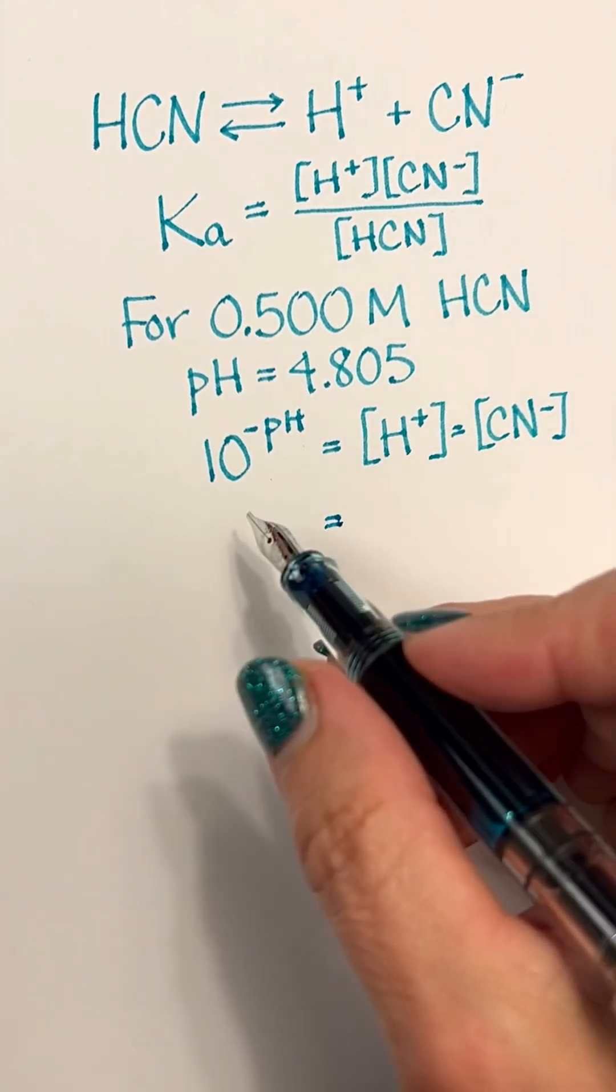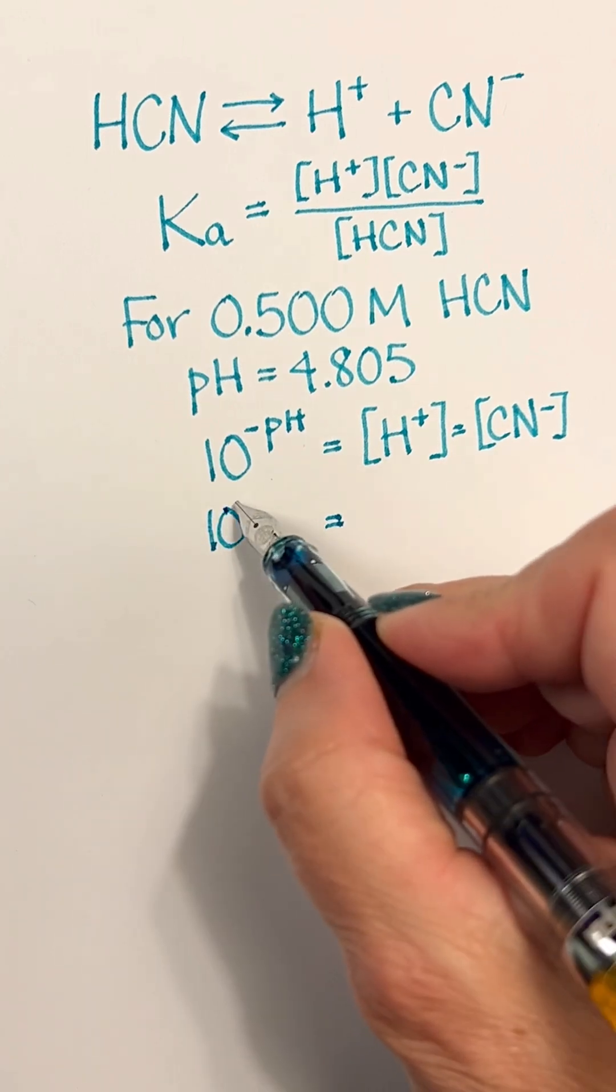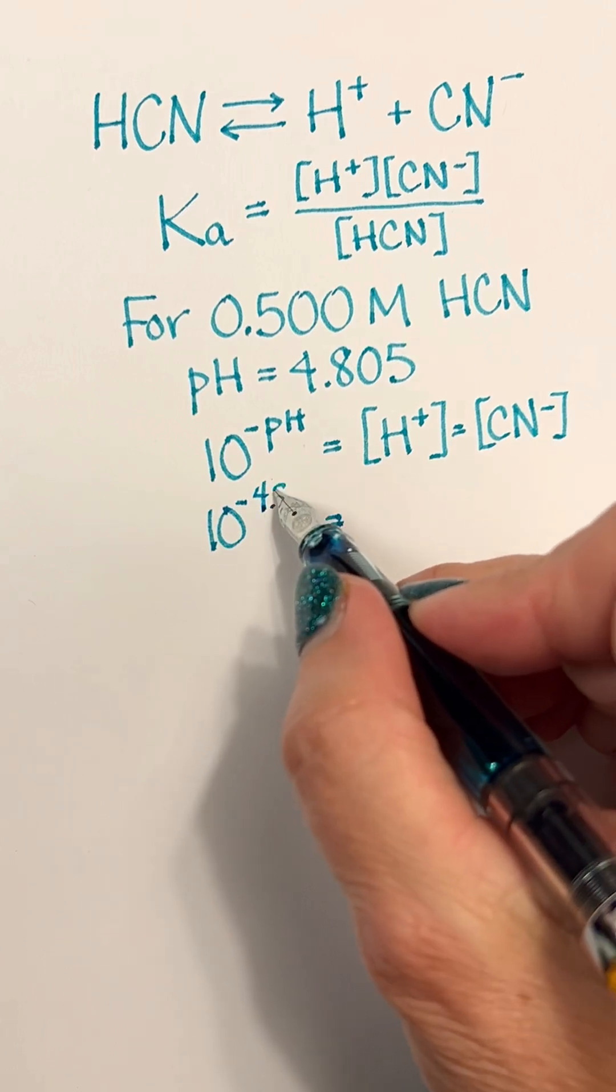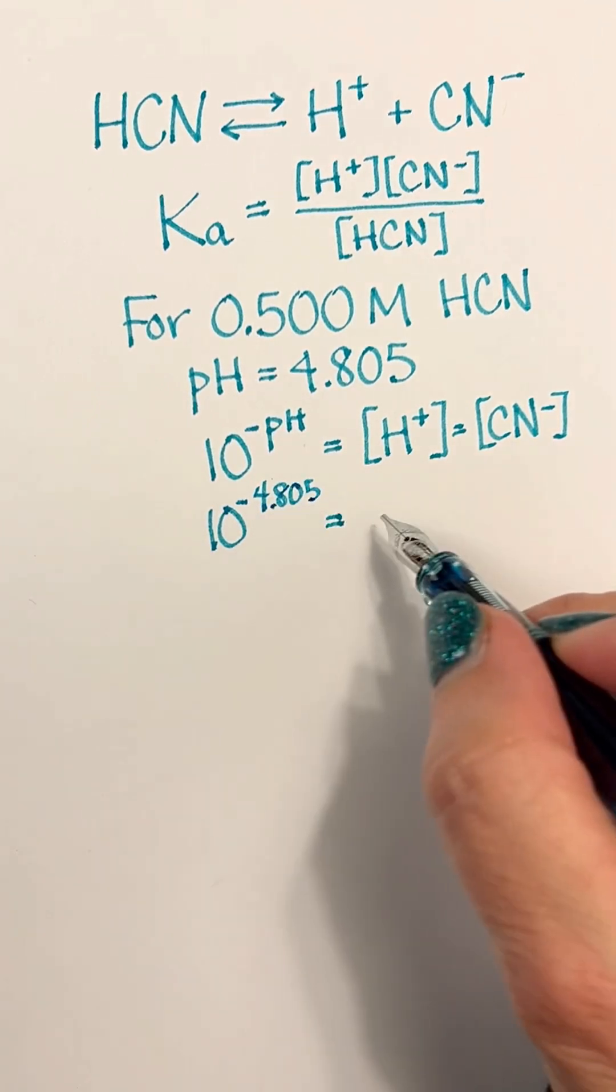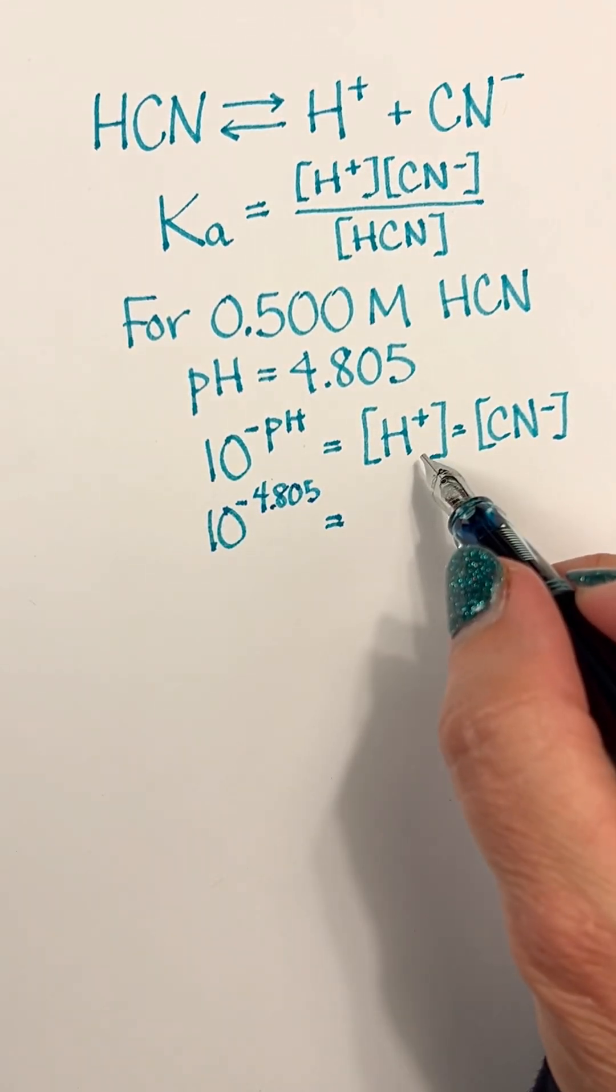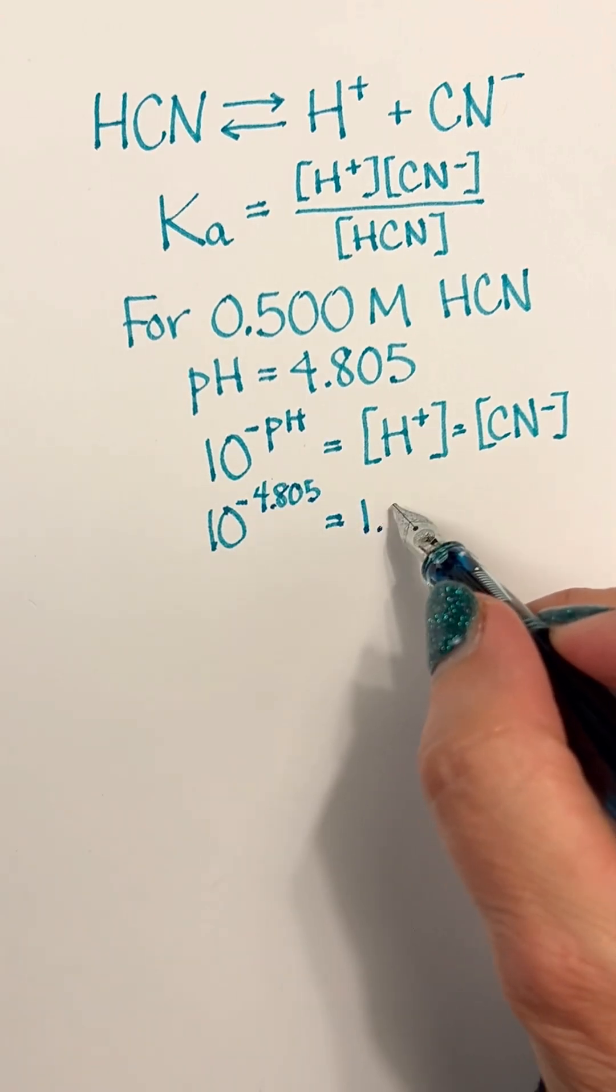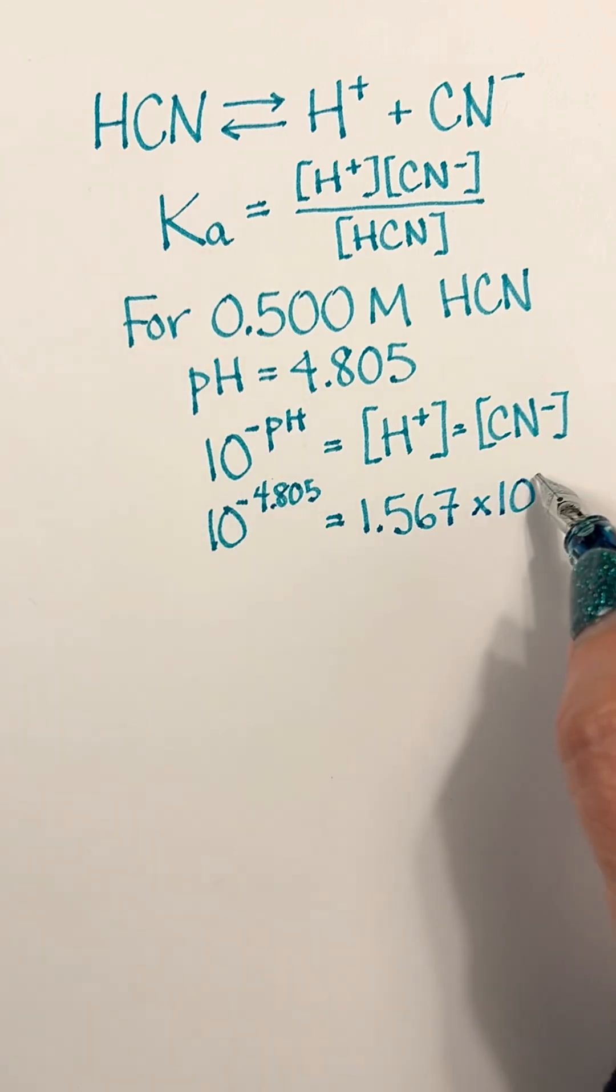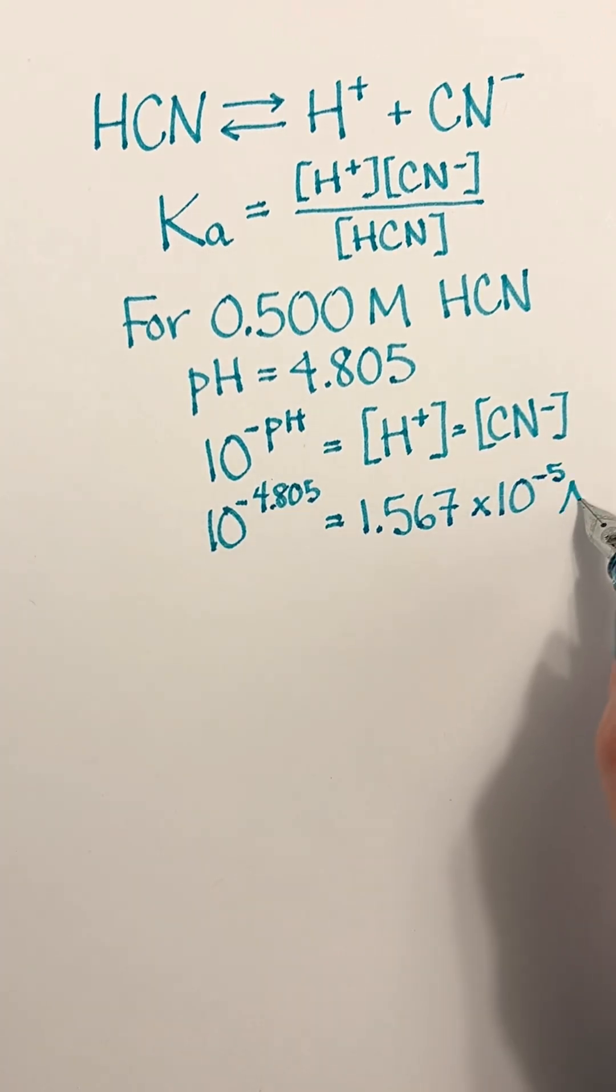If we put in the value of 10 to the minus 4.805, calculate that and get the concentration of hydrogen ions, we get 1.567 times 10 to the minus 5th molar.